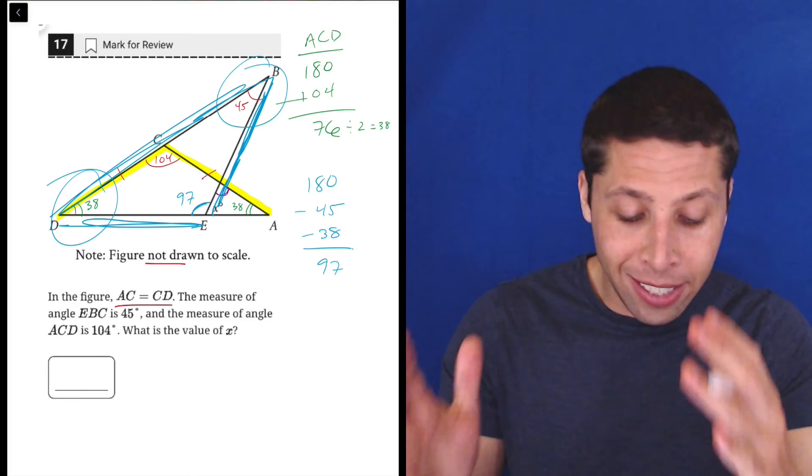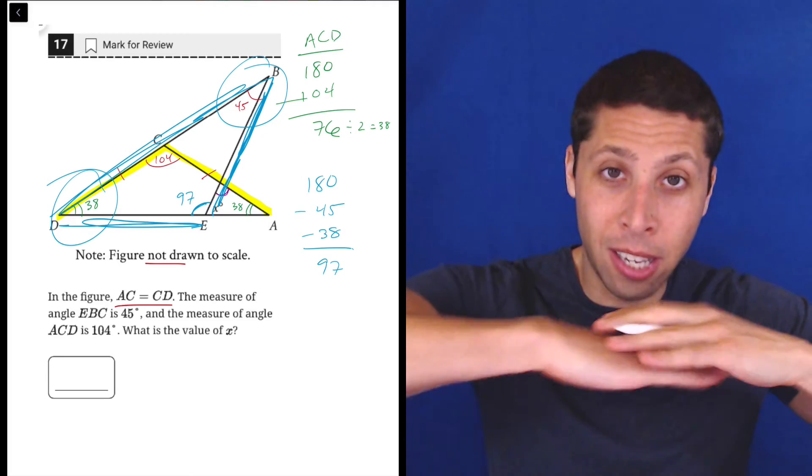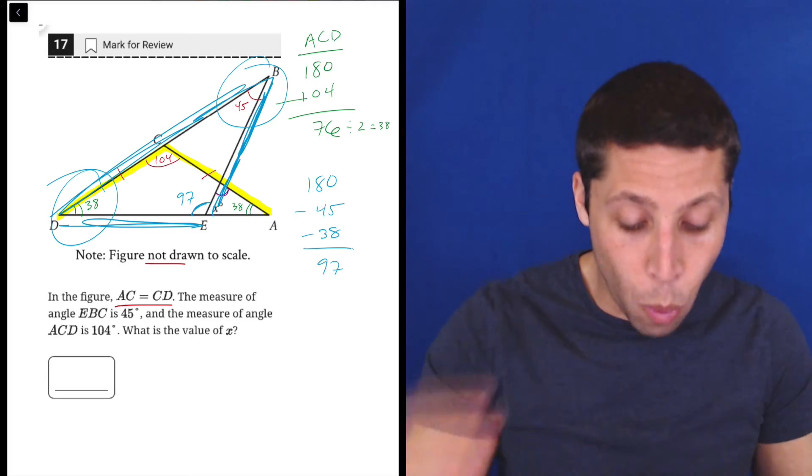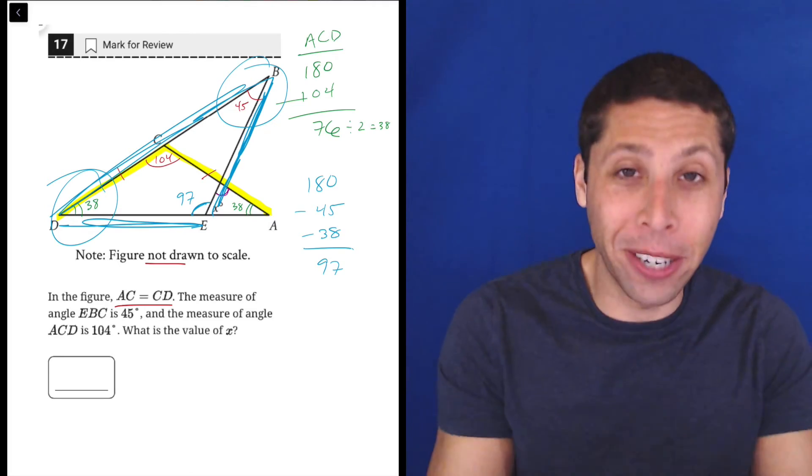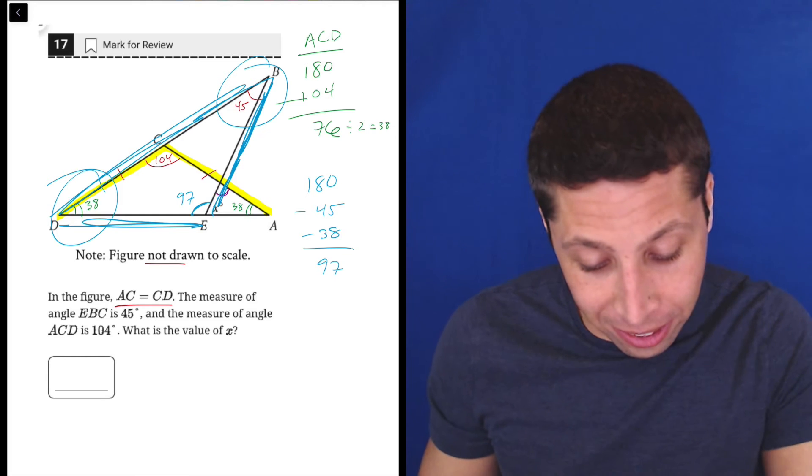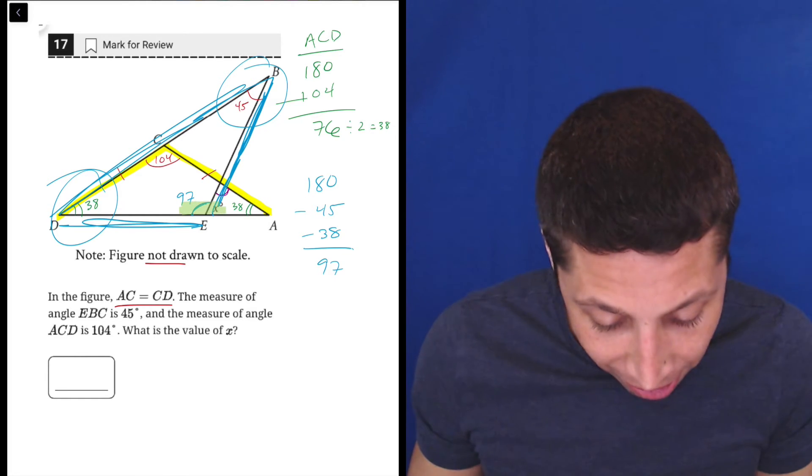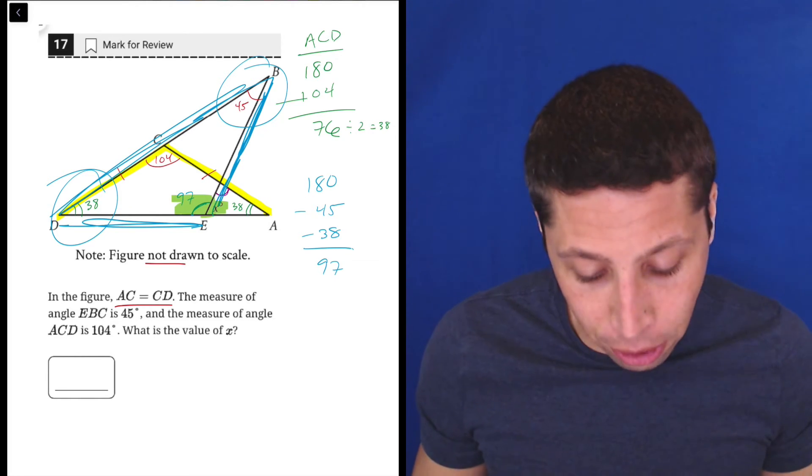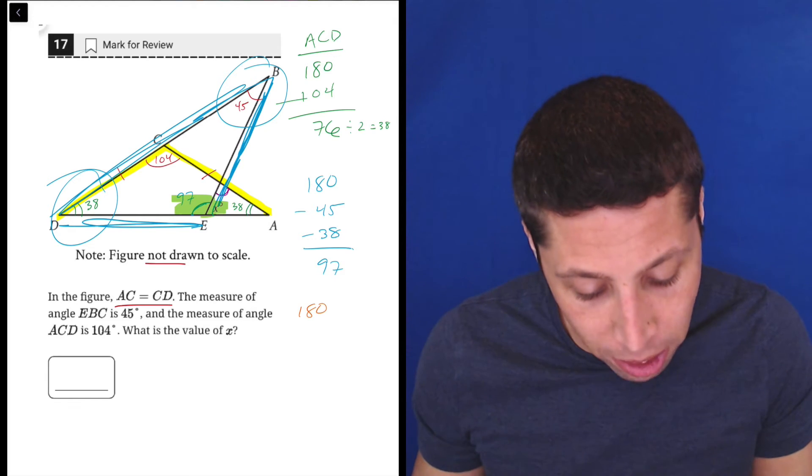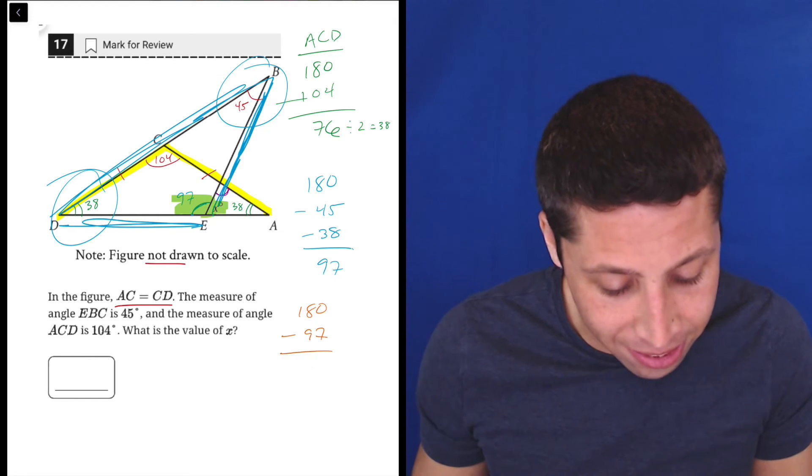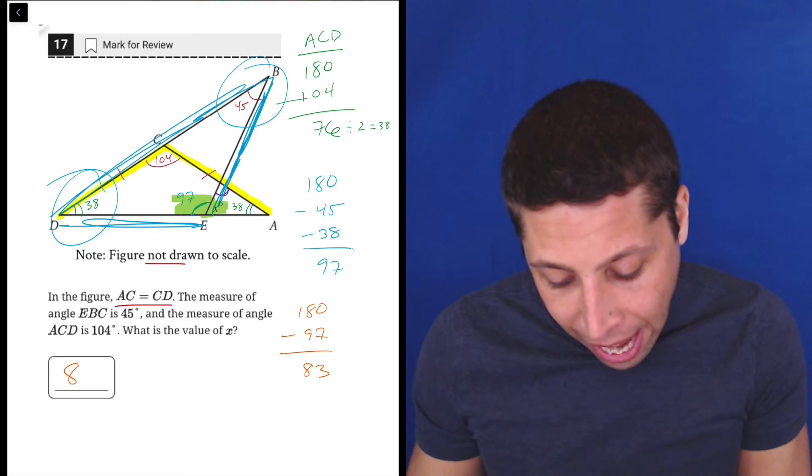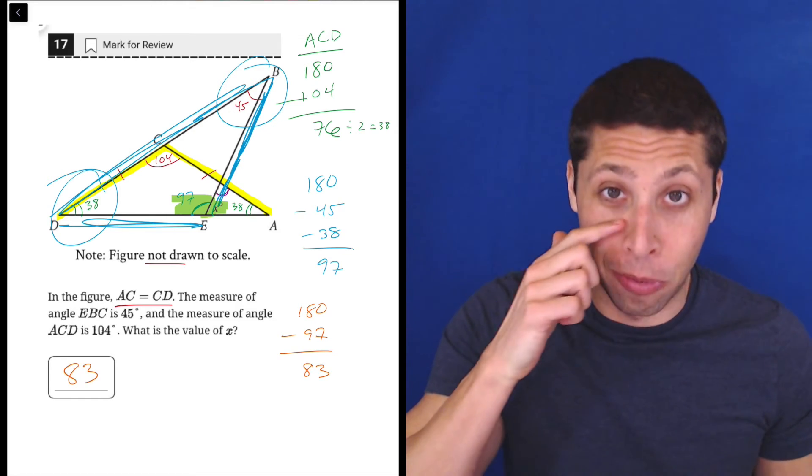Now 97 is on a line, it's a straight angle with X, the thing we want, and I've buried it in all this drawing. But basically, the last step here is just to recognize that these two angles together are going to be 180. So we can do another 180 minus the 97, that is 83. And that is the final answer for X.